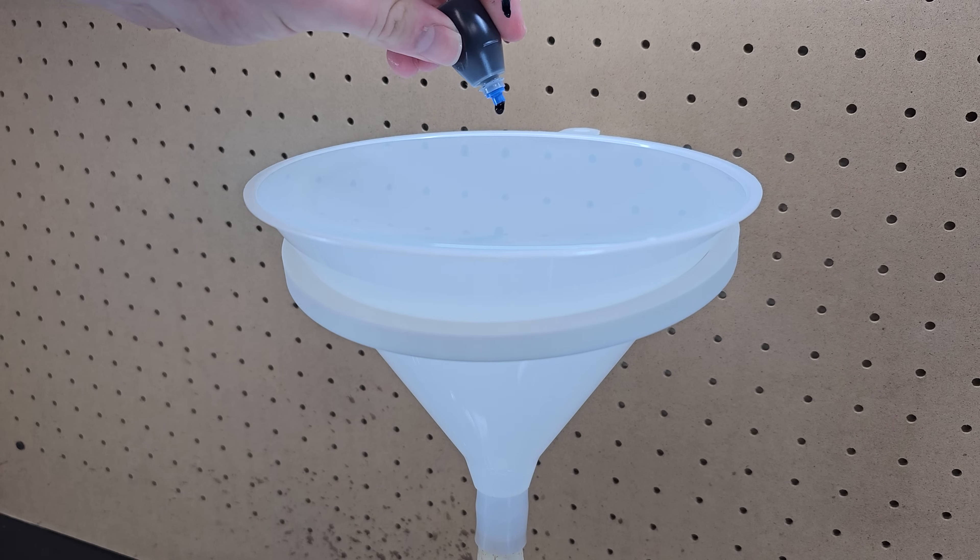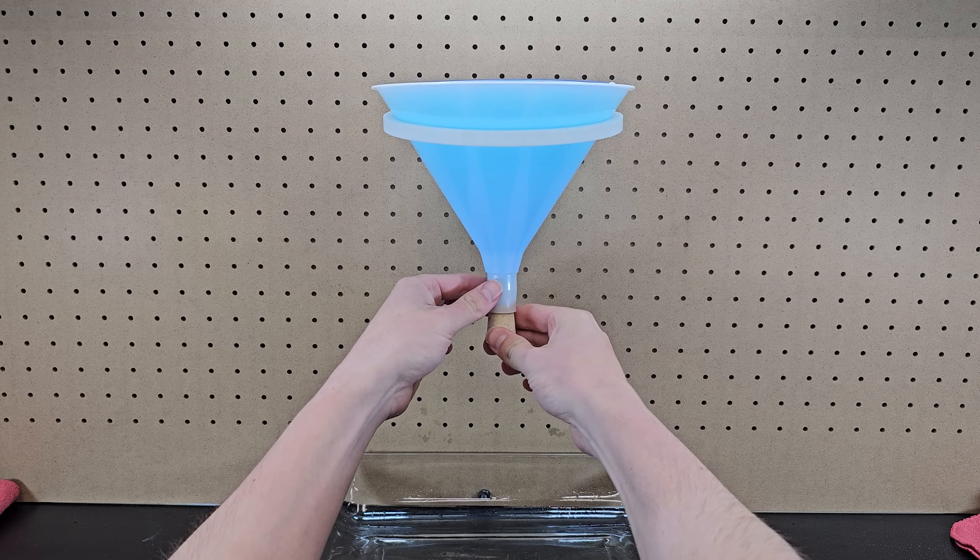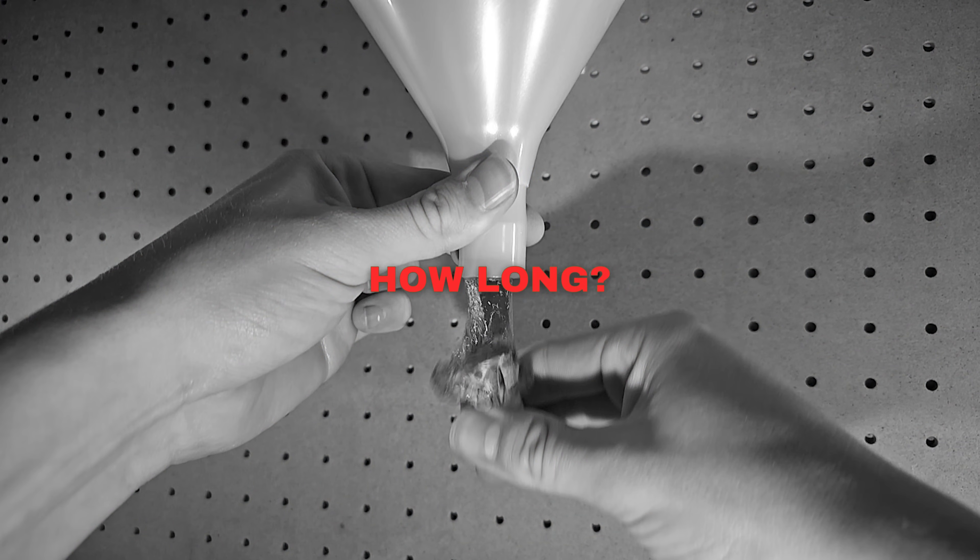If you take a funnel like this and fill it to the top with some water that's been dyed blue and pop the cork out, it's going to take some time to drain, but the question is, how long?